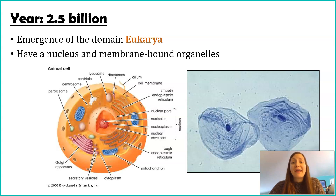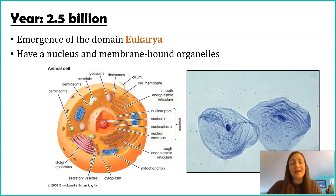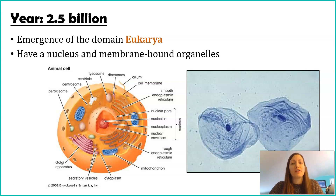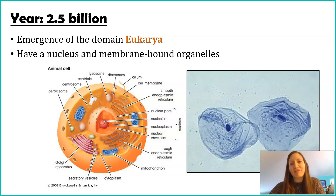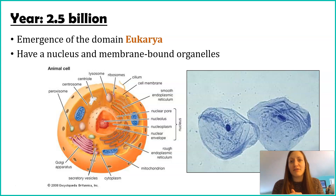Eukarya is the name of the domain. The other domains are bacteria and archaea, so eukarya includes all of the eukaryotes. While there are many differences between eukaryotes and prokaryotes, the two features we're going to focus on are having a nucleus — specifically a nuclear envelope, essentially a holding cell for the genetic material — and membrane-bound organelles.